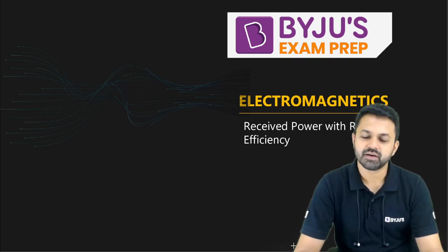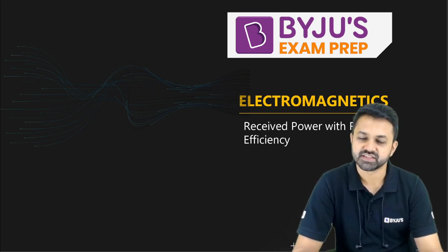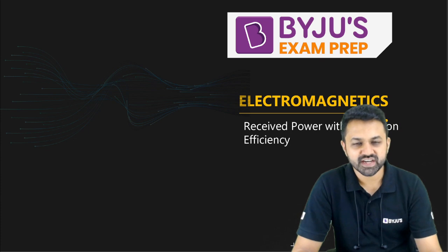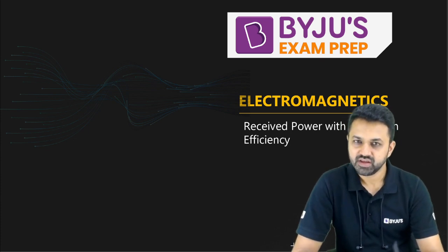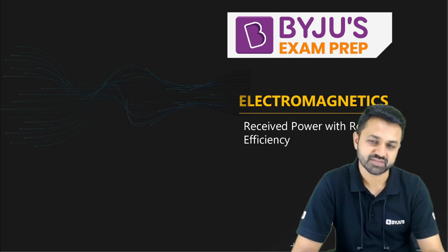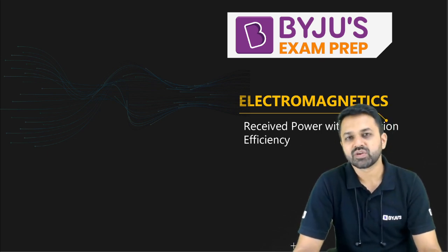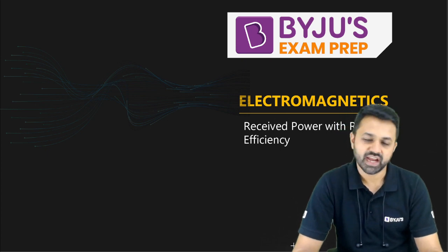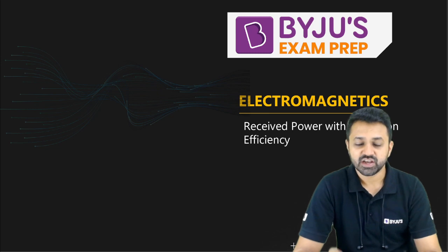Hello everyone, welcome to Byju's Exam Prep. In this Trichopedia session, I am going to discuss received power with reflection efficiency. We have already discussed the Friis transmission equation where you can get the received power by one antenna. You transmit the power, and by some other antenna which is at some distance d, you can receive the power. How we can write this particular equation, that also we have discussed.